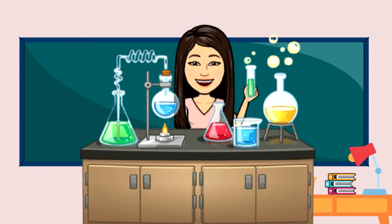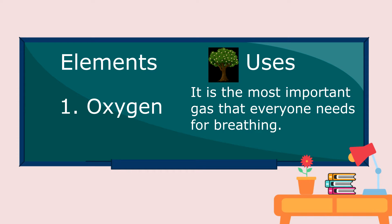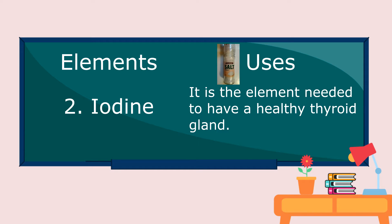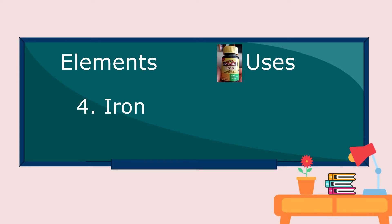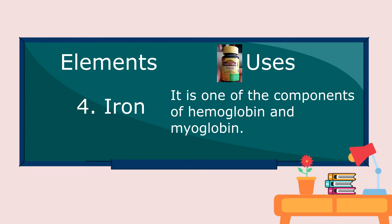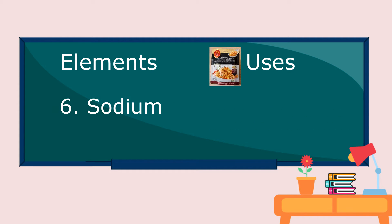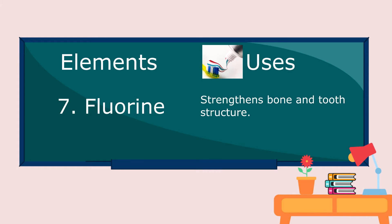Let's find out how important elements and compounds are in our daily lives. Elements and their uses: 1. Oxygen - it is the most important gas that everyone needs for breathing. 2. Iodine - it is the element needed to have a healthy thyroid gland. 3. Calcium - it is an essential mineral that makes up bones and teeth. 4. Iron - it is one of the components of hemoglobin and myoglobin. 5. Potassium - it maintains heartbeat within the regular range, controls electrolyte balance, and helps to prevent high blood pressure. 6. Sodium - regulates amount of body fluid involved in nerve transmission. 7. Fluorine - strengthens bone and tooth structure.